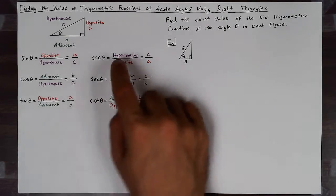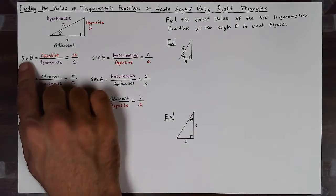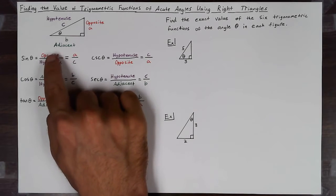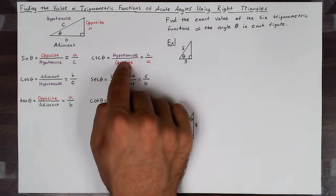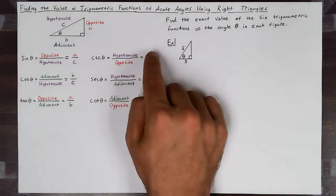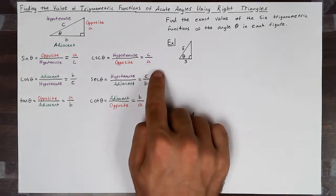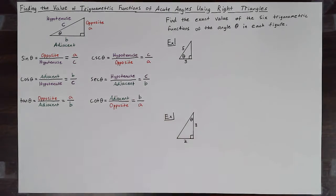Since cosecant is sine's reciprocal, instead of doing opposite over hypotenuse, cosecant would be hypotenuse over opposite, giving me c over a. Then secant is c over b, and cotangent is b over a.